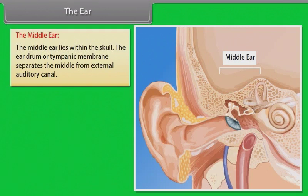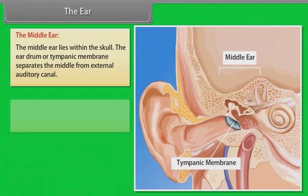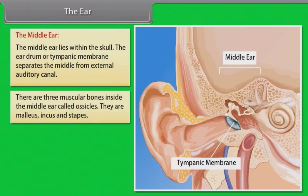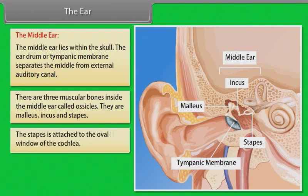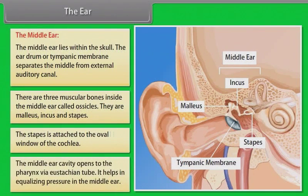The middle ear lies within the skull. The eardrum or tympanic membrane separates the middle ear from the external auditory canal. There are three ossicle bones inside the middle ear: malleus, incus, and stapes. The stapes are attached to the oval window of the cochlea. The middle ear cavity opens to the pharynx via the Eustachian tube, which helps in equalizing pressure in the middle ear.